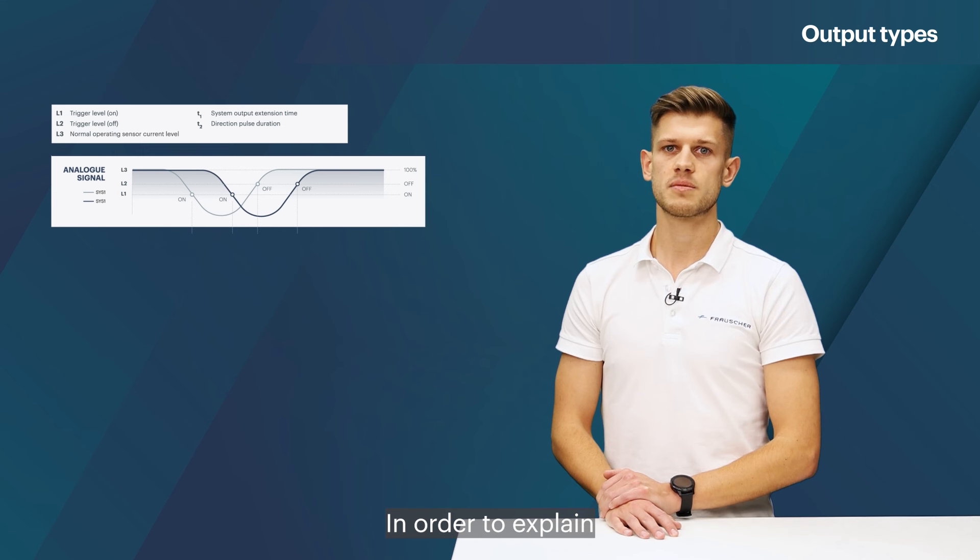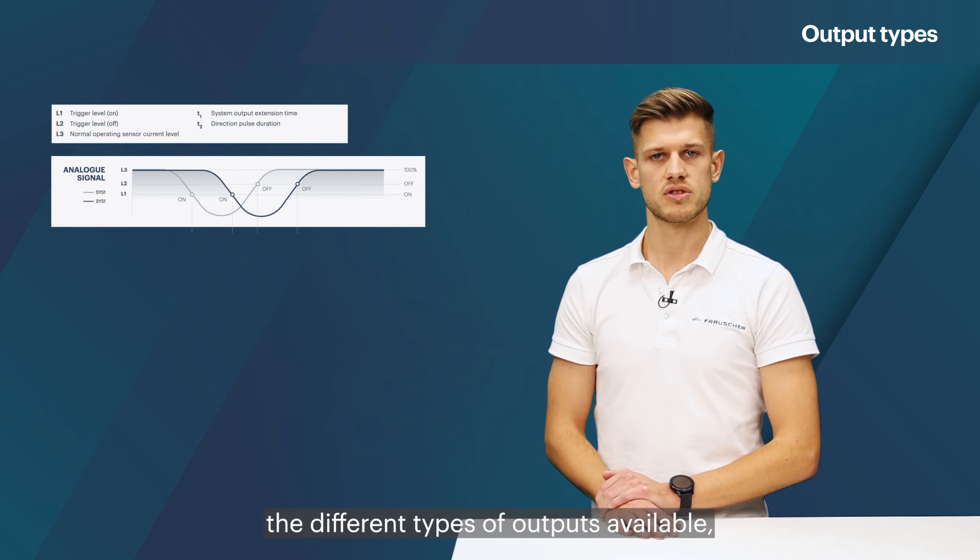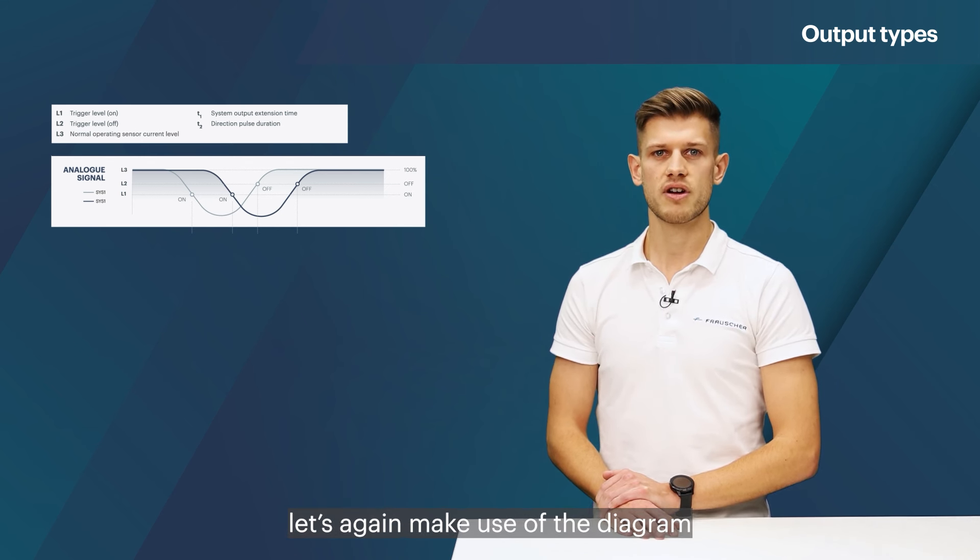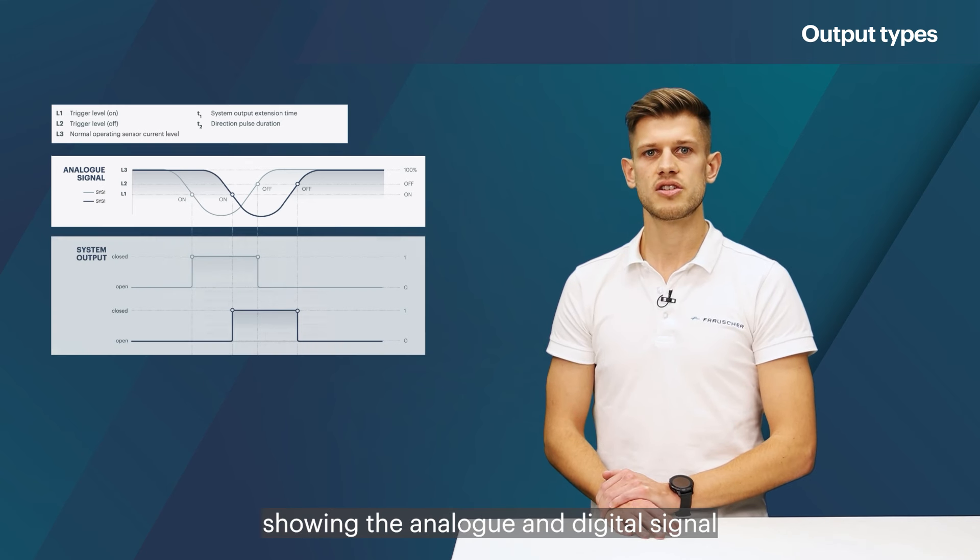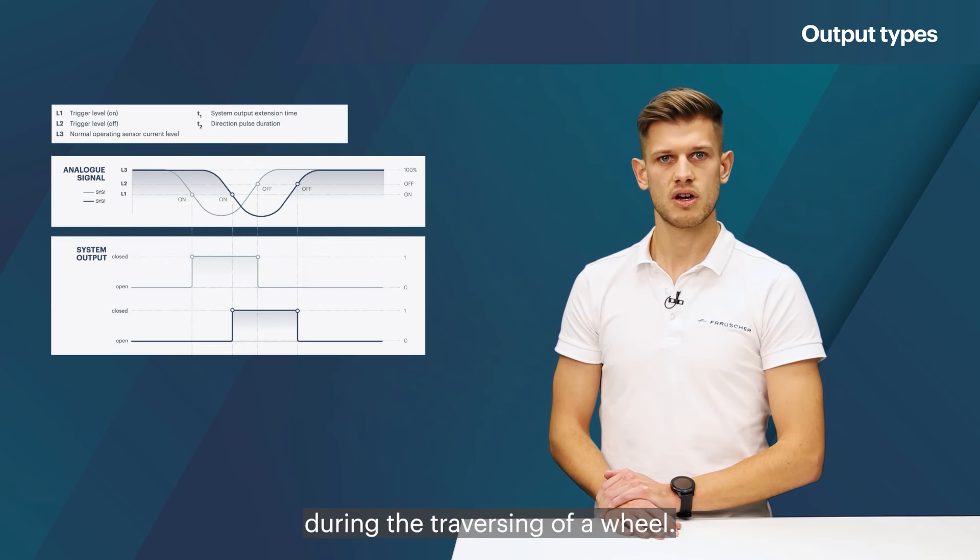In order to explain the different types of outputs available, let's again make use of the diagram we are already familiar with, showing the analog and digital signal during the traversing of a wheel.